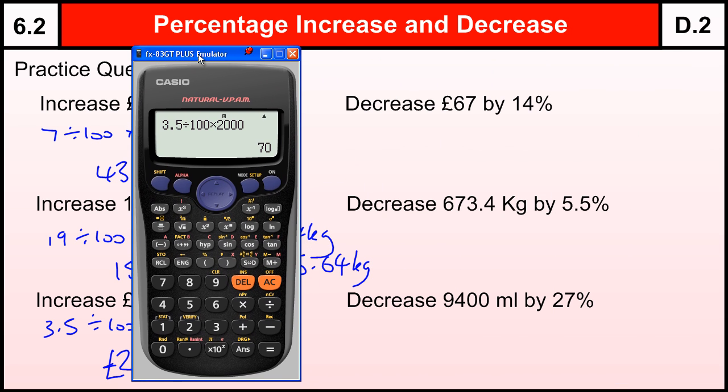Now for the decreases. Same idea, working out the percentage. 14 divided by 100 gives us 0.14 times by 67. So 0.14 times by 67. And then this time, I want to do 67 take away the answer I just worked out. And that gives me £57.62.